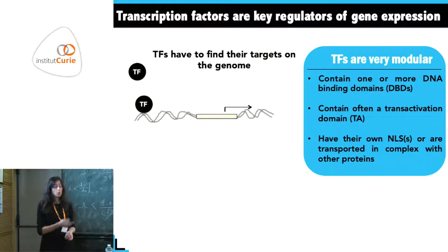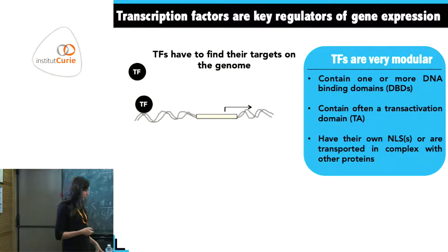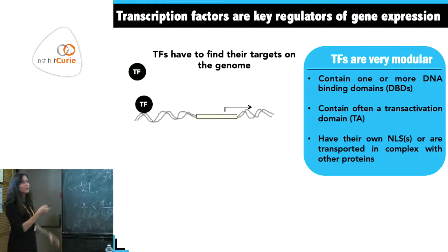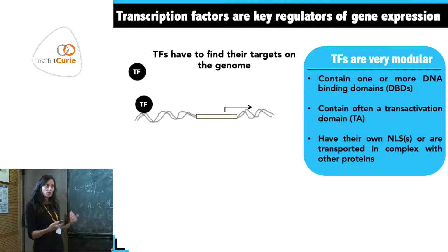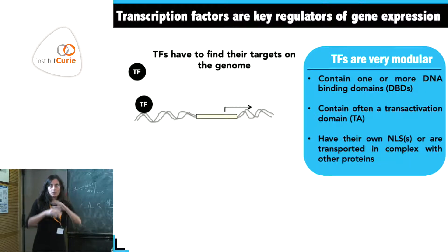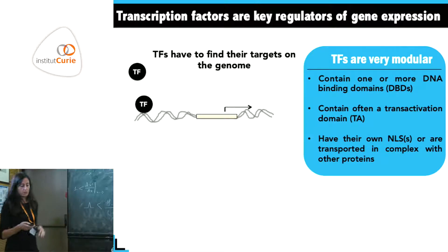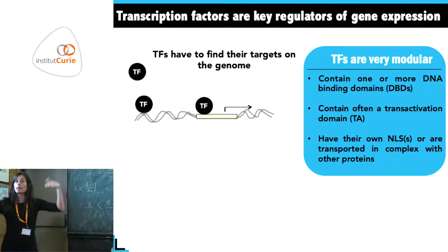Transcription factors have to find their target on the genome. It is thought that they bind non-specifically to DNA and then slide along it, reducing the search from three-dimensional space onto one-dimensional sliding to find their specific target. Finally they find it, sit there, and can bring all the rest of the machinery to start transcription.